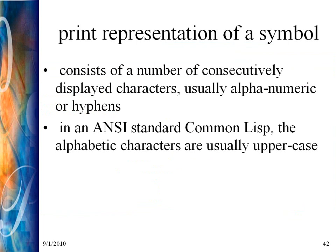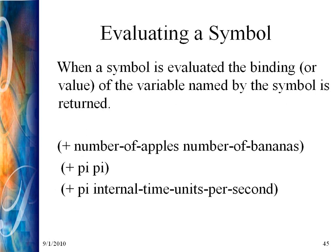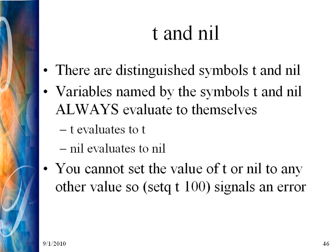There are two special symbols, T and nil, representing true and false. The variables named by these symbols always evaluate to themselves: T evaluates to T, nil evaluates to nil. You can't set the value of T to anything other than itself. The form that would try to set T to 100 fails. Sometimes you want to use T as a variable without thinking, and then you get an error when you run the code — that's why. These are special symbols representing true and false, and you will see them used in example code.